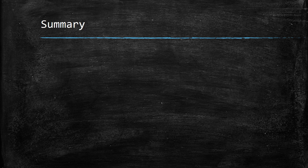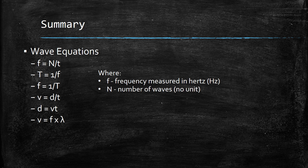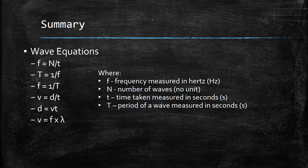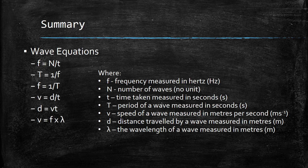Summary. These are the wave equations we've come across so far. It's important to remember what each of the symbols are, what they mean, and what the units are. F is the frequency measured in hertz. N is the number of waves, no unit. T is the time taken, measured in seconds. Capital T is the period of the wave, measured in seconds. V is the speed of the wave, measured in meters per second. D is the distance traveled by a wave, measured in meters. And lambda is the wavelength of the wave, measured in meters.